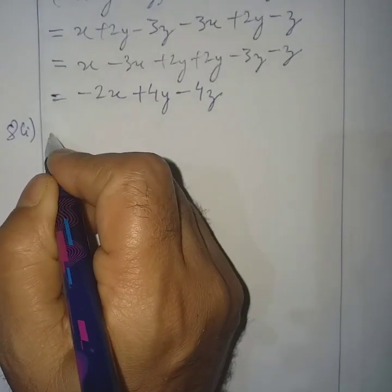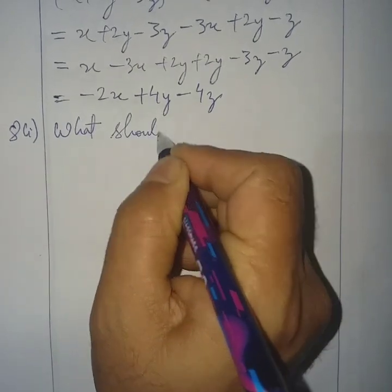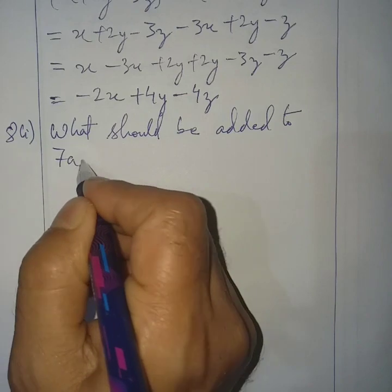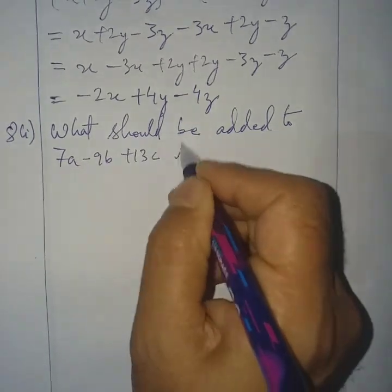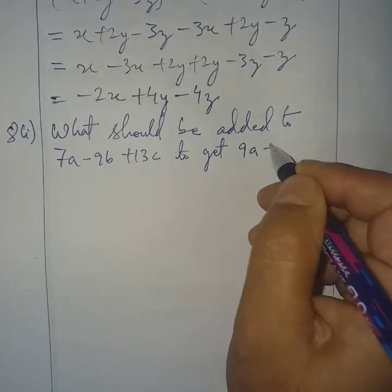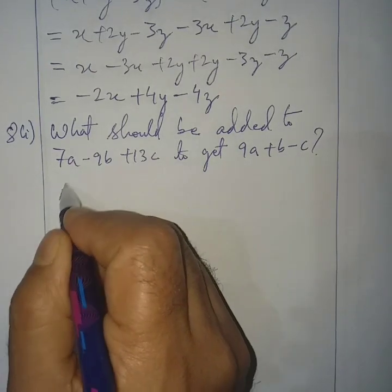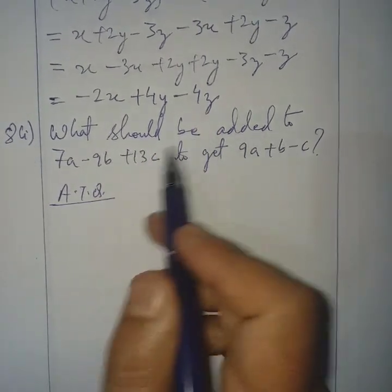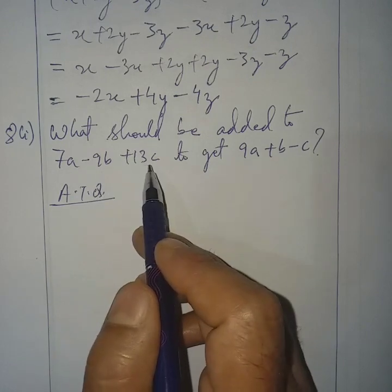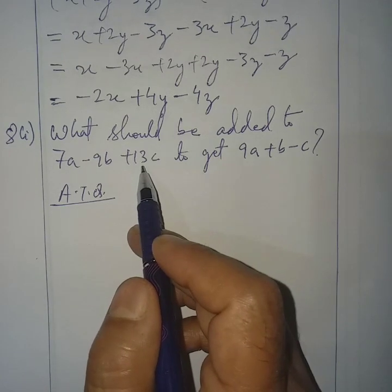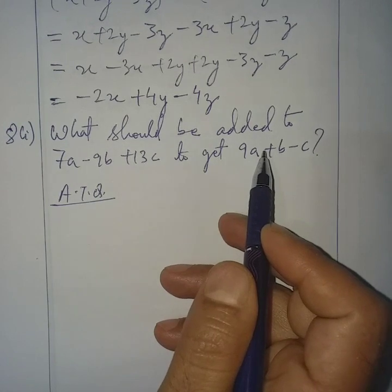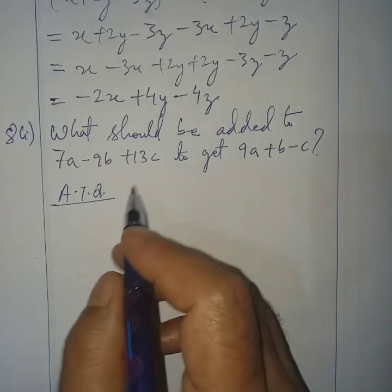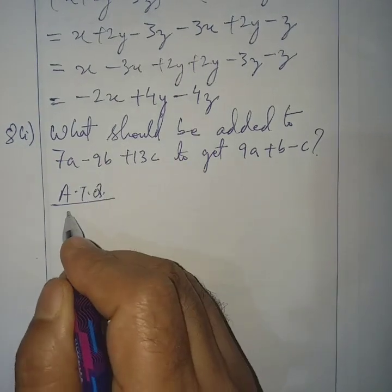Question number 8: what should be added to 7a minus 9b plus 13c to get 9a plus b minus c? Something should be added to this to get this. That means this is greater than this. So if we subtract this one from this, we will get that algebraic expression.